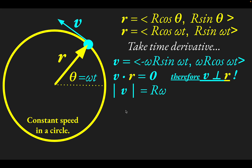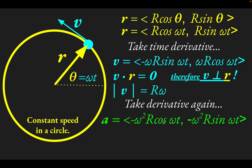If we take the time derivative of the velocity vector, we get the acceleration. The derivative of sine is cosine, and we get another factor of omega in front, so now there's omega squared out front. The derivative of cosine is negative sine, and again another factor of omega appears. The result is that the acceleration vector has r·cos(ωt) in the x-component and r·sin(ωt) in the y-component — just like the position vector — but both components are multiplied by negative omega squared.